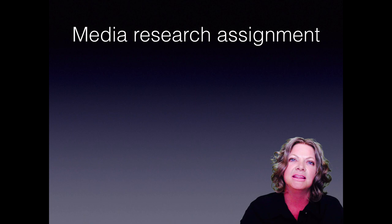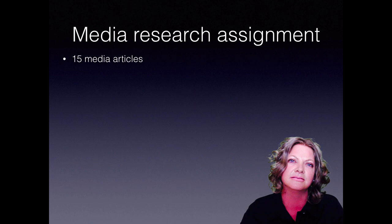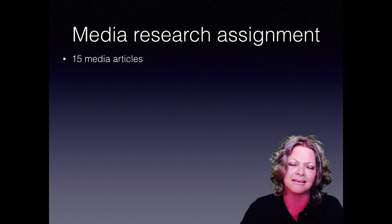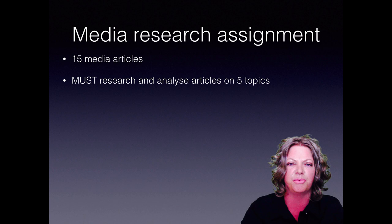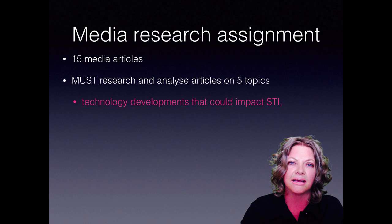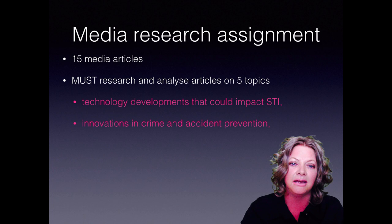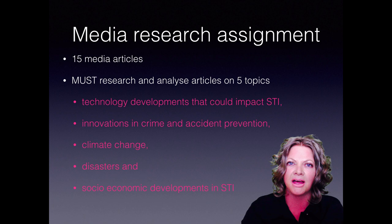The media research assignment requires you to obtain 15 media articles. The easiest source is the internet. Those media articles must cover five topics as stipulated in the unit standards: technology and technological developments that could impact short-term insurance; innovations in crime and accident prevention; climate change; disasters; and socioeconomic developments in short-term insurance — for example, when South Africa's economy was reduced to junk status, the fees-must-fall campaign, or how unemployment affects short-term insurance.